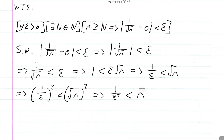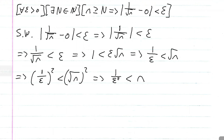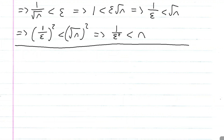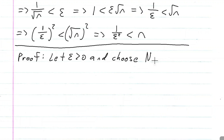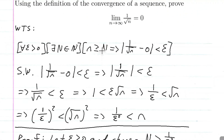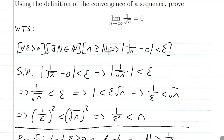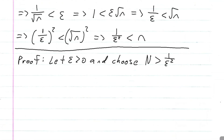So now we have a good candidate for our capital N. This is our scratch work, so this is not part of the proof. Now that we're done with the scratch work, we can actually start our proof. We're going to let epsilon be greater than zero and choose our big N to be greater than one over epsilon squared. Then we suppose that little n is greater than or equal to big N.